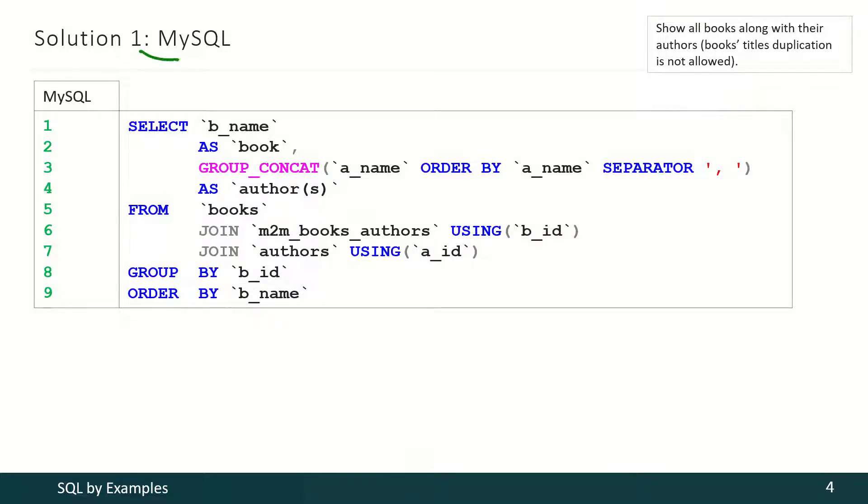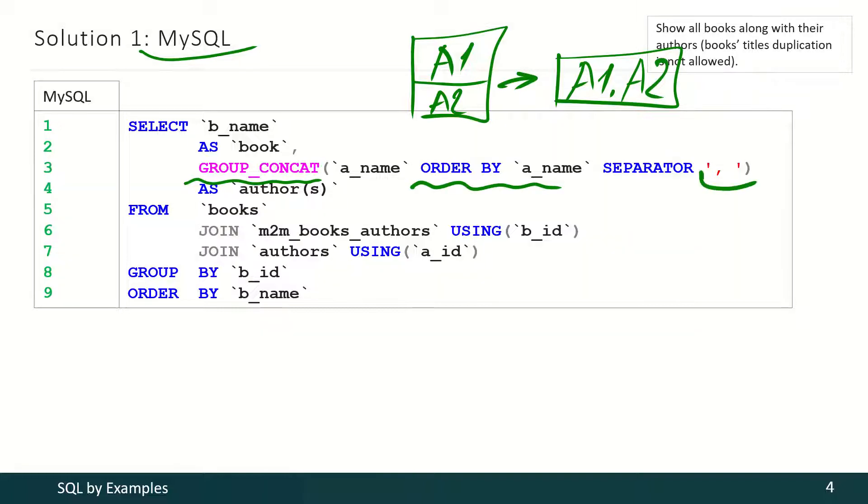To achieve that result in MySQL we have to use GROUP_CONCAT function. That function does the next. Imagine a book has two authors, author1 and author2, and this information is transformed into one cell with author1 here and author2 here. We may also control the ordering here and the separator information.